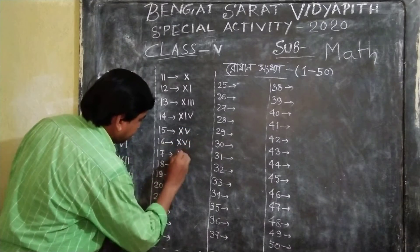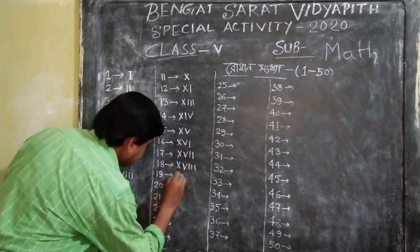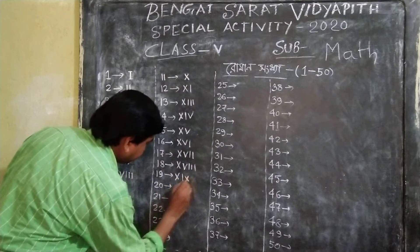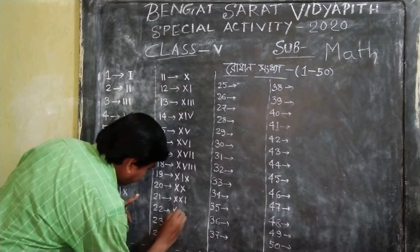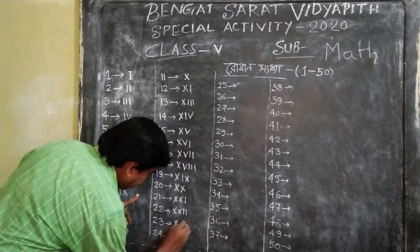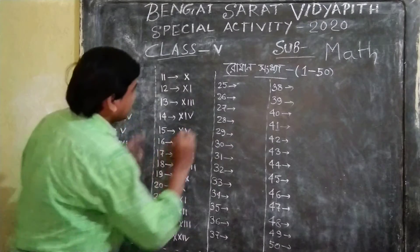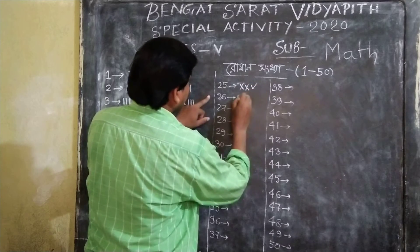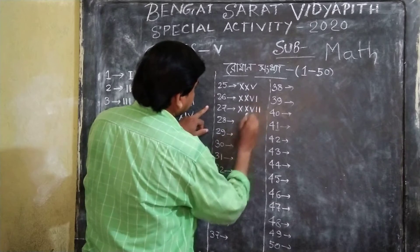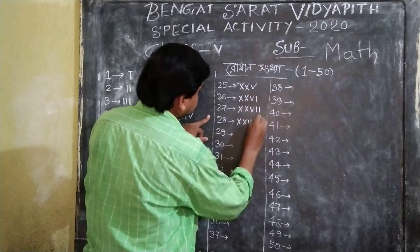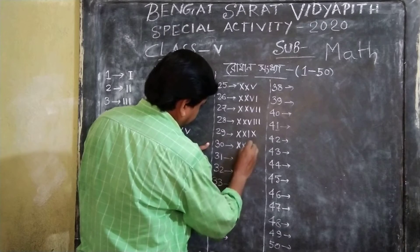17, 18, 19, 20, 21, 22, 23, 24, 25, 26, 27, 28, 29, 30.